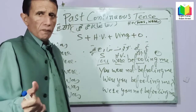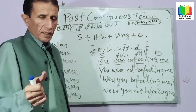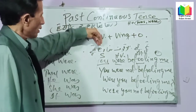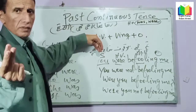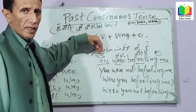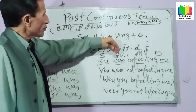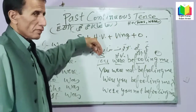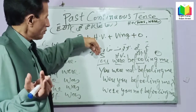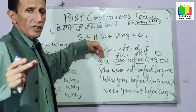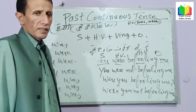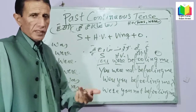One thing more — if you want to add interrogative question words to these sentences, you can write. There are four: Why, When, How, and Where. For example: Why were you befooling me? When were you befooling me? How were you befooling me? And where were you befooling me? These are the interrogative question words you can add at the beginning of the sentence.